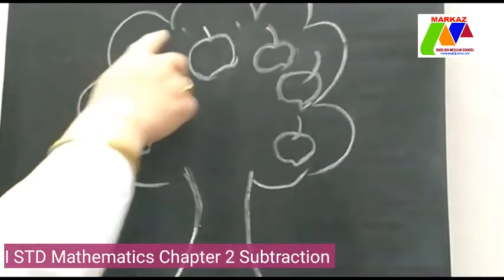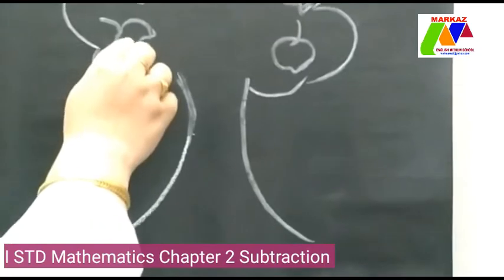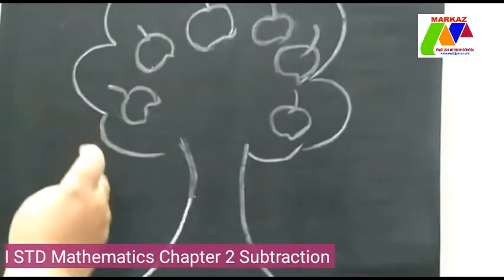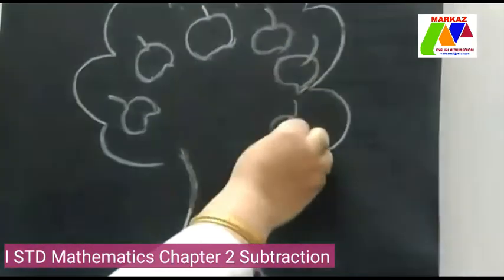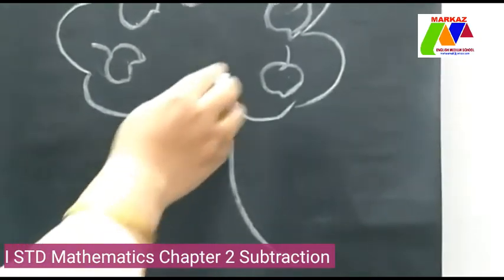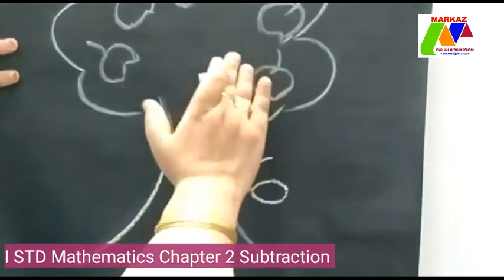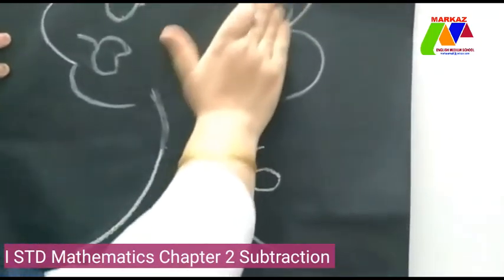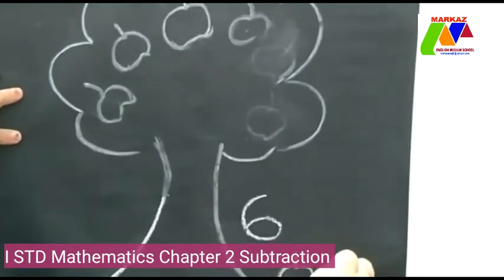Then I will tell you a story. Children, let's start. What is this children? This is a tree with apples. How many apples can we see here? Please count it: 1, 2, 3, 4, 5, 6. Here we can see 6 apples. One day, 2 apples fell down.